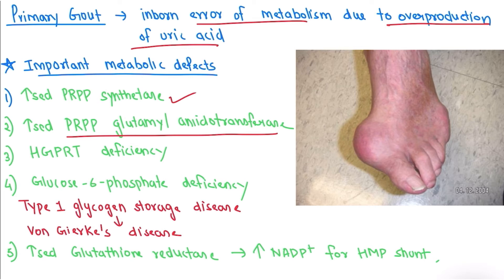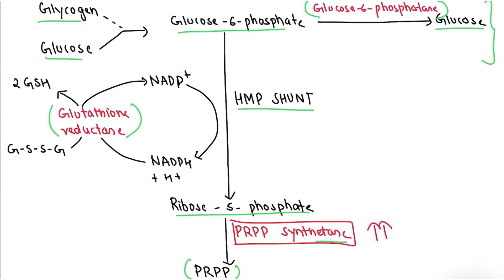The third cause is HGPRT deficiency, which also leads to Lesch-Nyhan syndrome. The fourth cause is glucose-6-phosphatase deficiency, related to glycogen metabolism — this is a Type 1 glycogen storage disease, also called von Gierke disease. With glucose-6-phosphatase deficiency, glucose-6-phosphate cannot be converted to glucose, so more glucose-6-phosphate is shunted into the HMP pathway, producing more ribose-5-phosphate, leading to more purine synthesis and increased uric acid, which gets deposited causing gout.